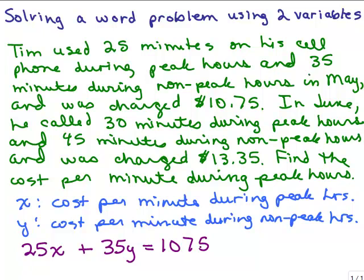Now let's do the same thing for what happened in June. He called 30 minutes during peak hours, so 30 by the cost per each minute is X, plus 45 minutes during non-peak hours, so 45Y. And the total cost was 1335.